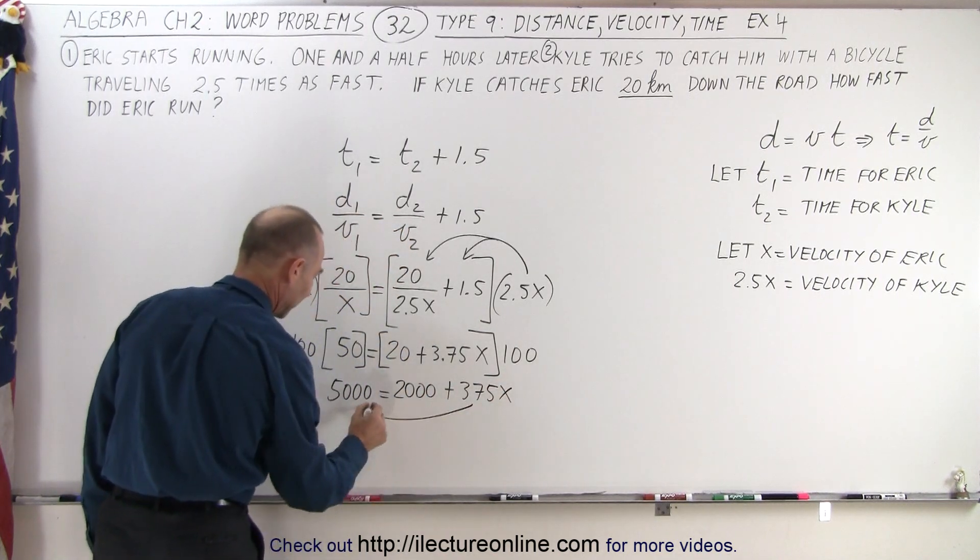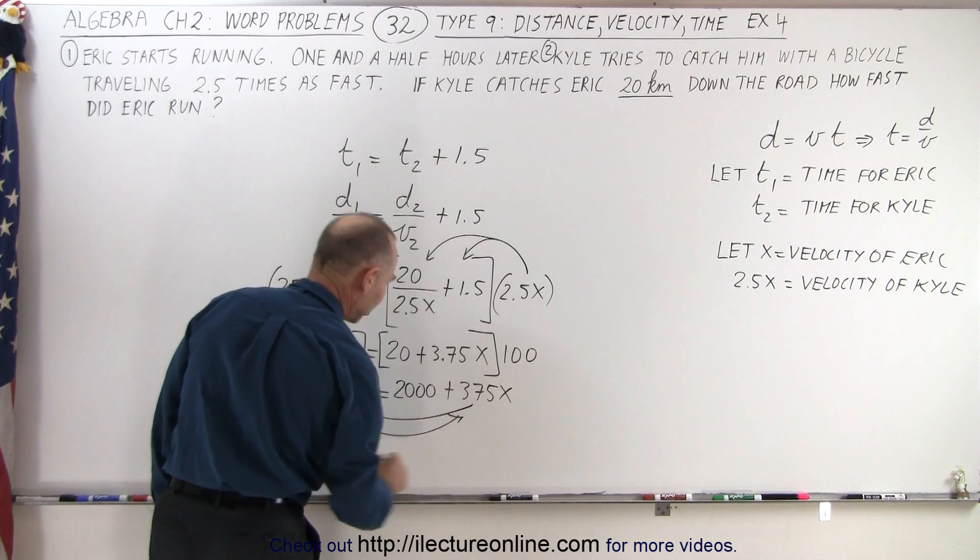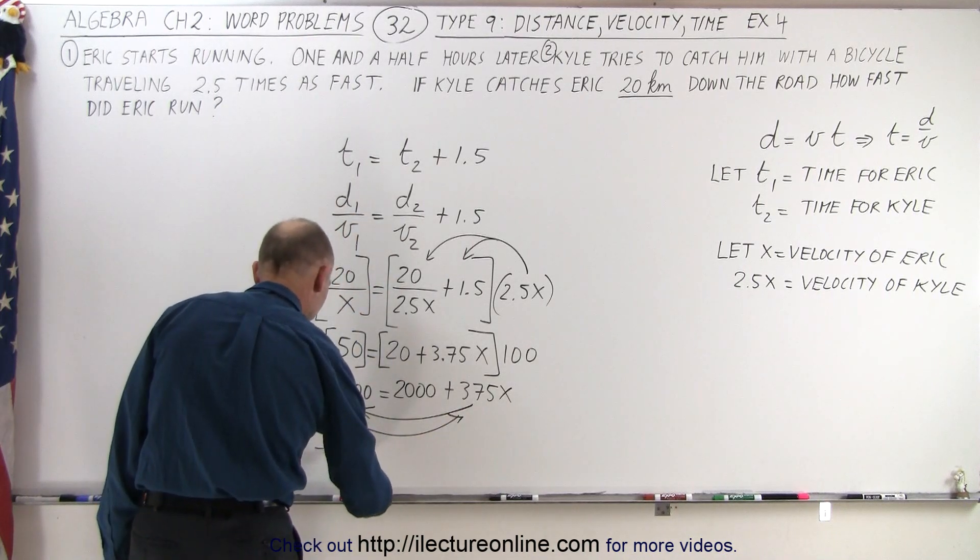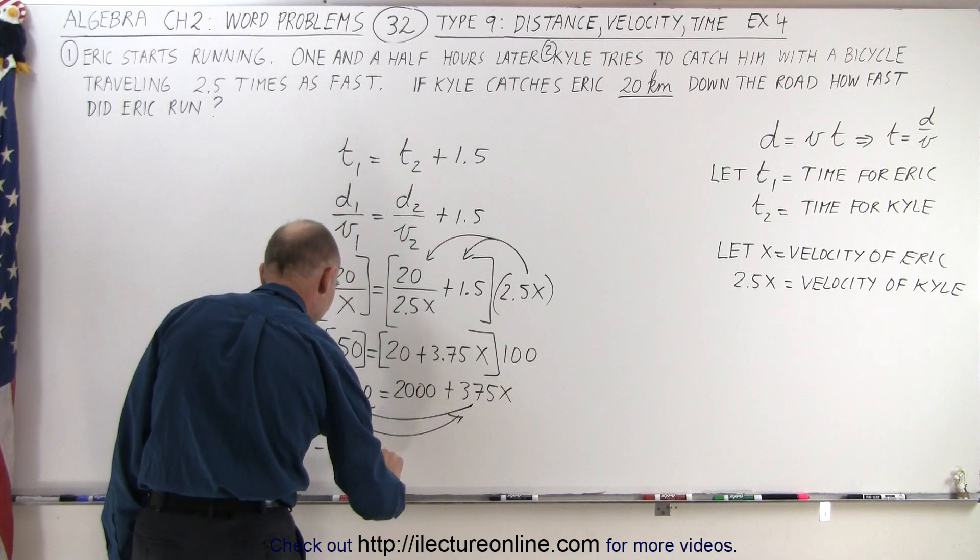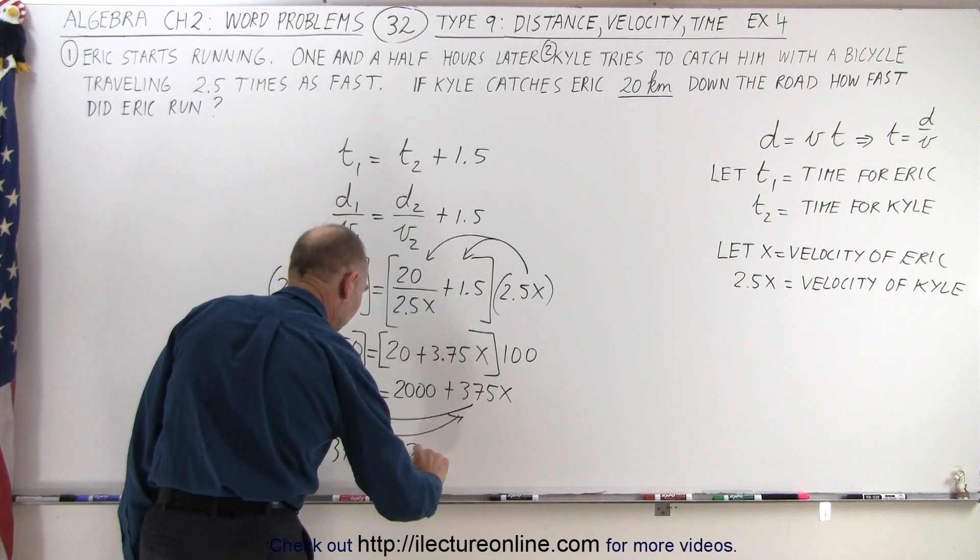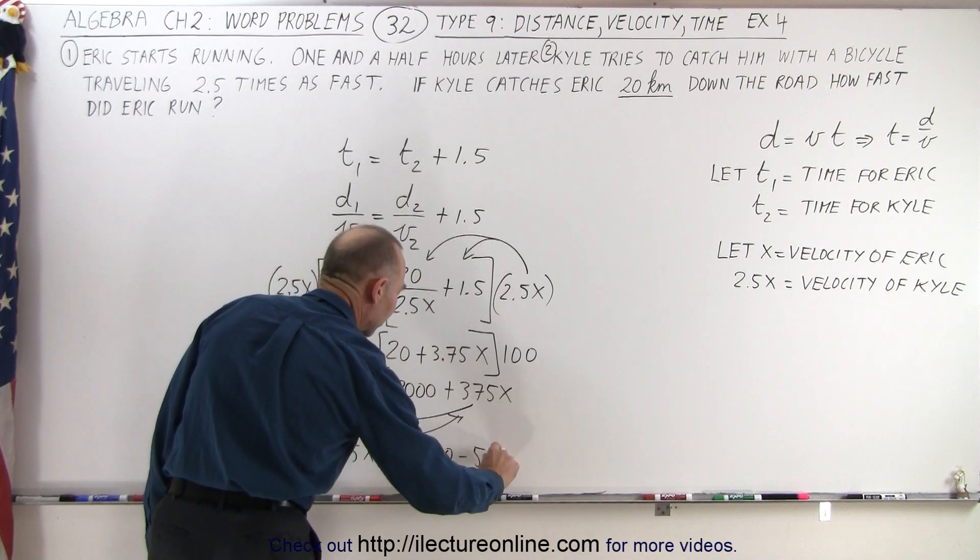Now we're going to move the 375 to the left and the 5,000 to the right. That gives us minus 375x is equal to 2,000 minus 5,000.